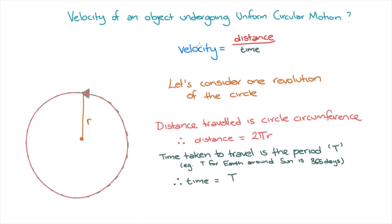If we look back at our velocity equation and plug in the values we've derived, we see that v, the velocity of an object undergoing uniform circular motion, is equal to 2πr divided by big T, the period. The speed of an object undergoing uniform circular motion is equal to 2πr on T.